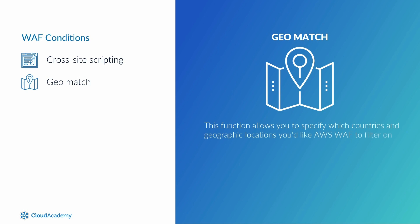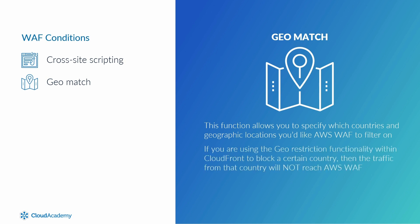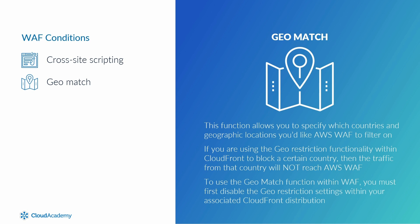Geo-match: this function allows you to specify which countries and geographic locations that you would like AWS WAF to filter on. This is a similar function that is provided with Amazon CloudFront. It's important to bear in mind that if you are using geo-restriction functionality within CloudFront to block a certain country from accessing your web application, then the traffic from that country will not reach AWS WAF. If you want to use the geo-match function within WAF, then you must first disable the geo-restriction settings within your associated CloudFront distribution.